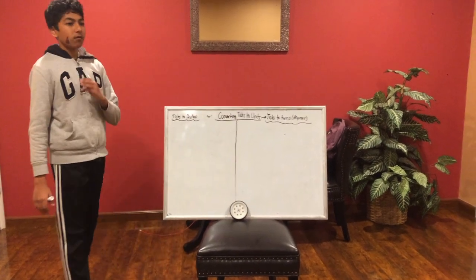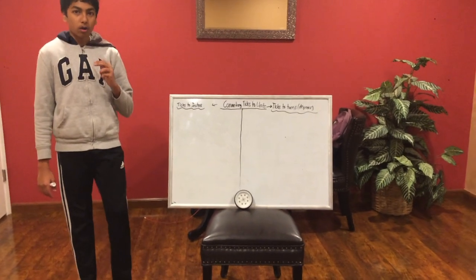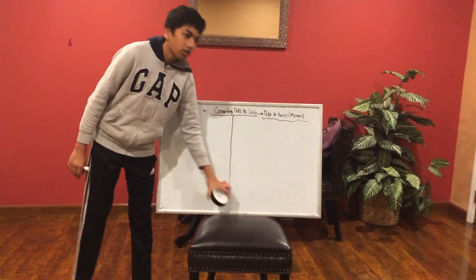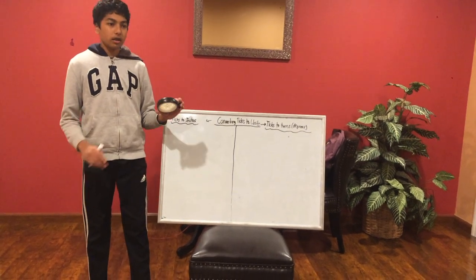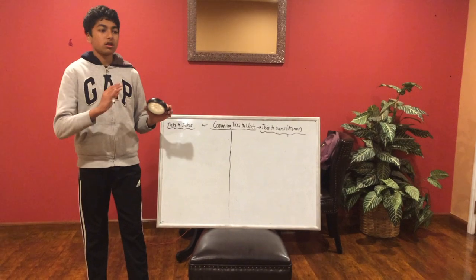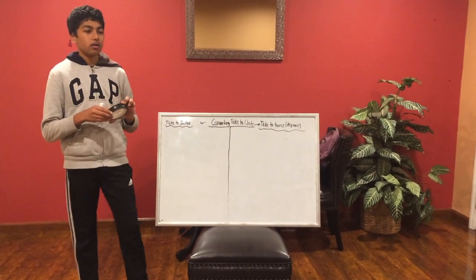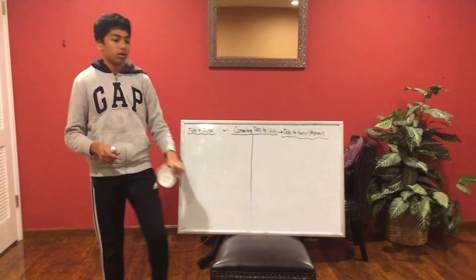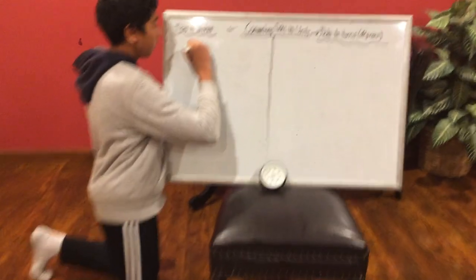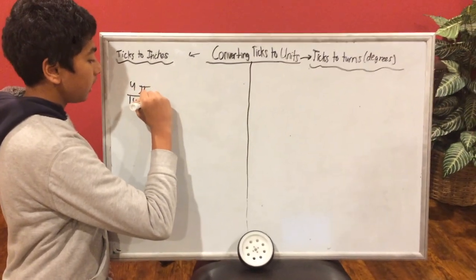We know that 1440 ticks are per rotation of the motor. And so, if we want to know the per rotation of the wheel, it's basically 4 multiplied by pi, which is the formula for circumference. And then we would divide that by 1440. So over here, we have 4 pi over 1440 ticks.